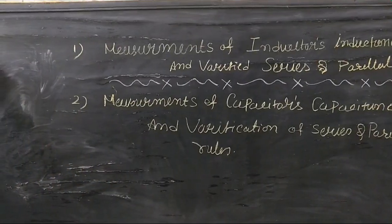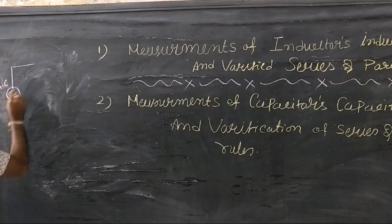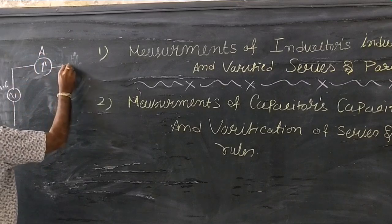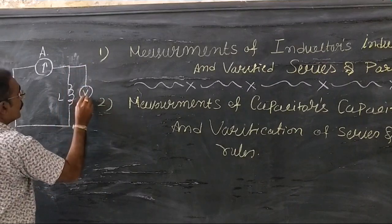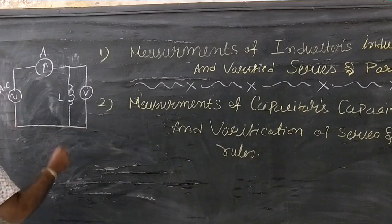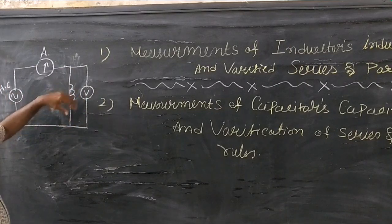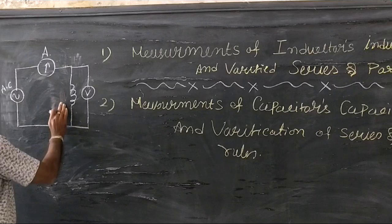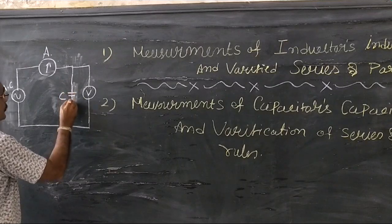It is a very simple circuit. We are providing AC supply — this is a variable AC supply — and one series AC current meter. This will be connected to the inductor L, and in parallel there is an AC voltage meter. You apply different AC voltages and find the voltage across the inductor as well as the AC current. In the same way, this arrangement can be used for capacitors to measure capacitance.